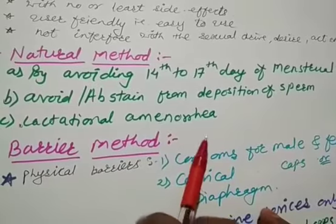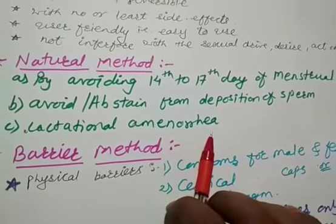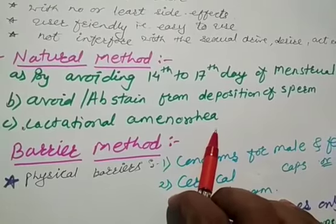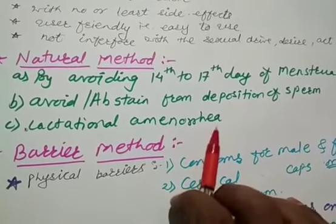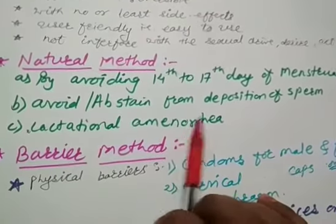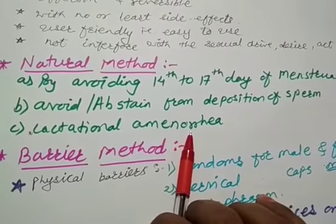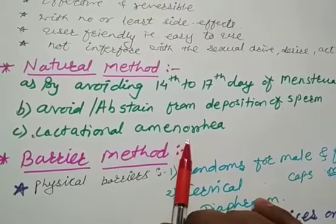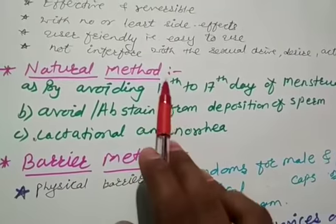So this method has been reported to be effective only up to maximum period of 6 months following parturition. In other periods, we can use other methods, but this is lactational amenorrhea. When parturition period and breastfeeding is suitable, that time it is suitable. So these all three methods are included into natural method.